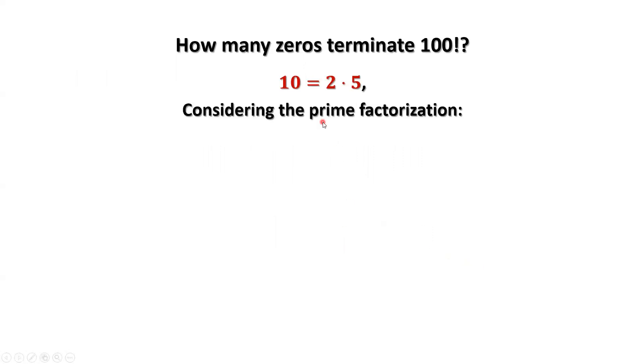Considering the prime number factorization of 100 factorial, we have 100 factorial equals 2 to the power of p1 times 3 to the power of p2 times 5 to the power of p3, and so on. We are only interested in factors 2 and 5.